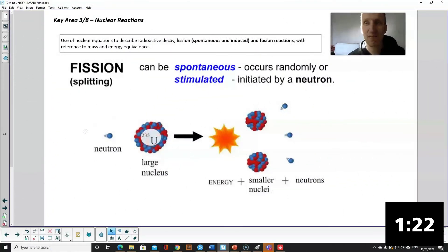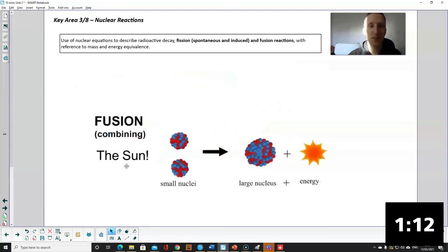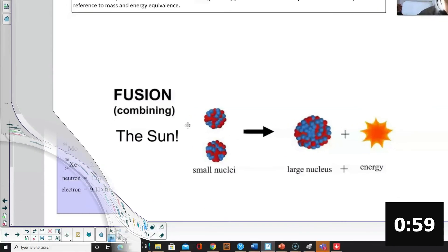Fission and fusion Nat 5 recap. Fission is splitting a larger nucleus into smaller nuclei. It either happens randomly spontaneously or you can fire in a neutron to stimulate the process. Fusion is the opposite where you're combining two small nuclei into a bigger nucleus. Both of those reactions the mass after the reaction is less than the mass before and that's because some mass is converted into energy according to E equals mc squared.